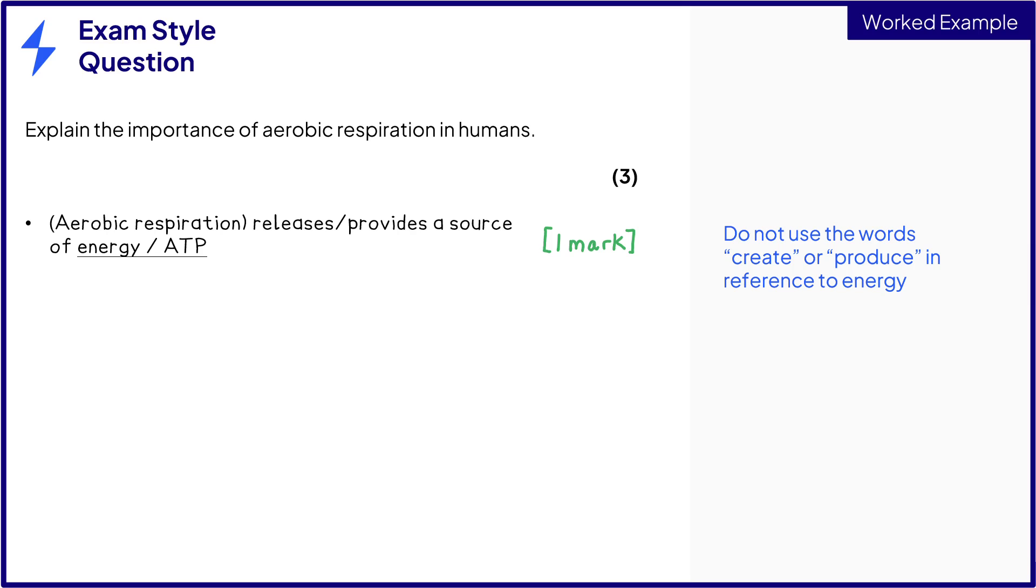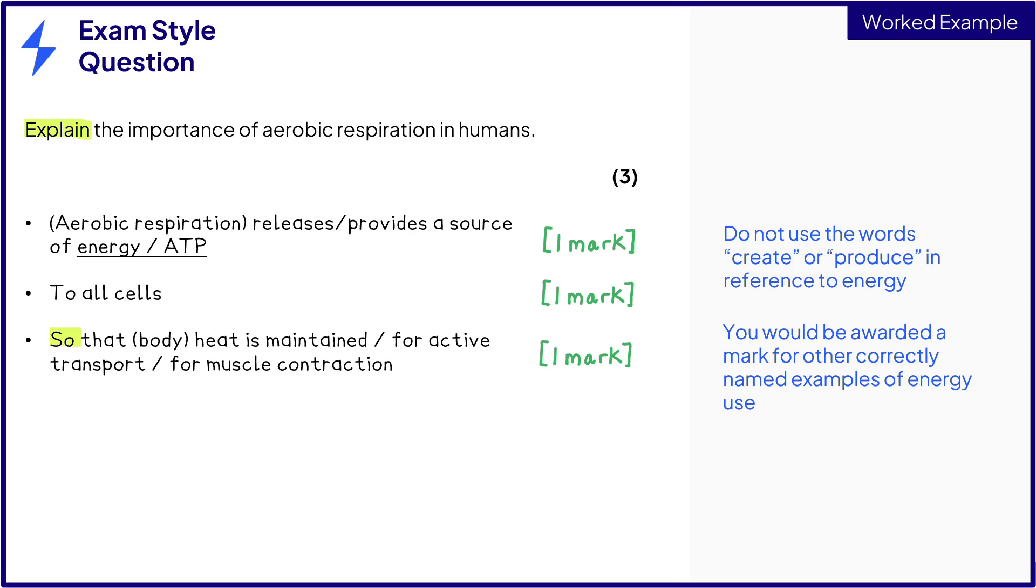A second mark can be awarded for stating that all cells need energy. And finally, since the command word requires us to explain our answers, we need to ensure we say why the energy is needed. Marks could be awarded for any correct answer, such as maintaining body heat, active transport, or muscle contraction. This would be your final mark. Other correctly named examples could also be accepted here.